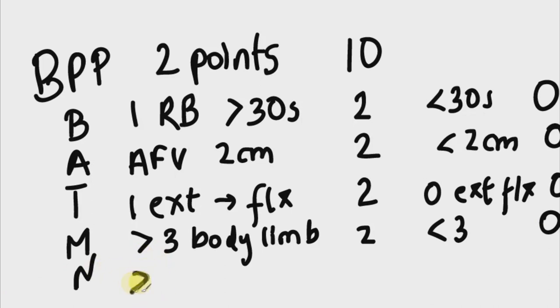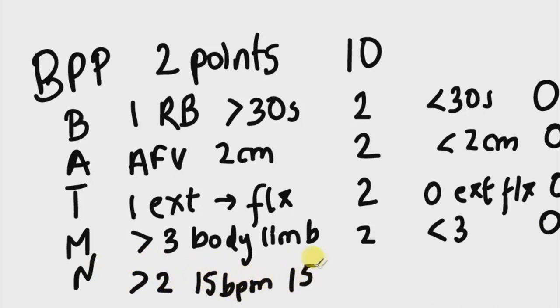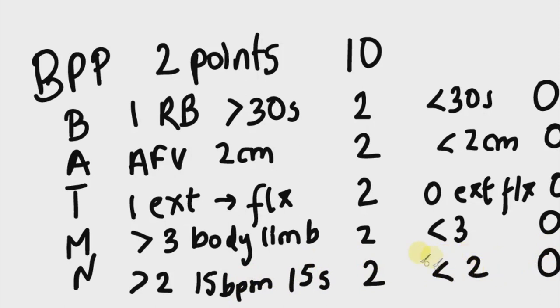For the NST component, a score of two is assigned if there are greater than two accelerations of fetal heart rate of greater than 15 beats per minute lasting for greater than 15 seconds within the 20-to-40-minute period. A score of zero is assigned if there is zero or one acceleration within 20 to 40 minutes.